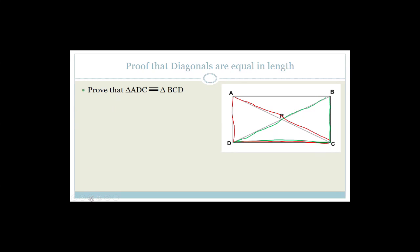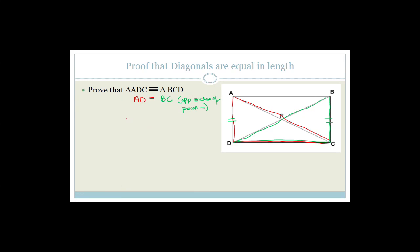Do you agree that AD is equal in length to BC? I know that because opposite sides of a parallelogram are equal in length, and since a rectangle is a special parallelogram, these must also be equal — opposite sides of a parallelogram are equal. We also know that DC equals DC, because it is common.